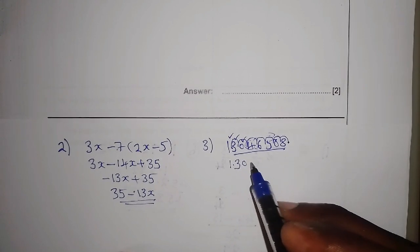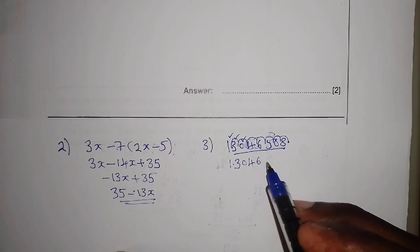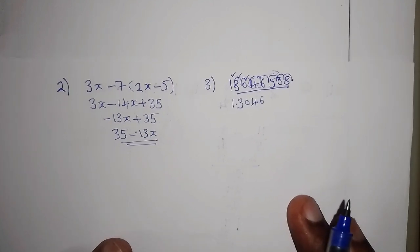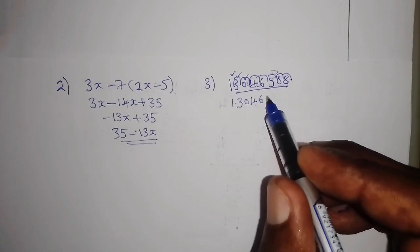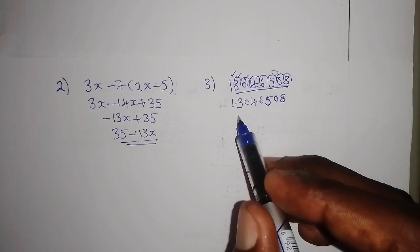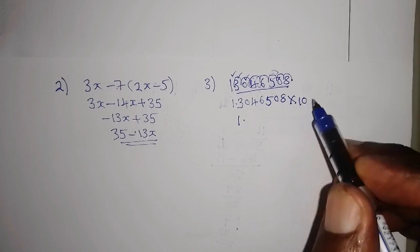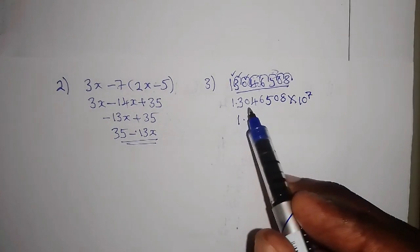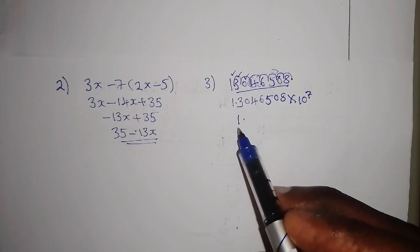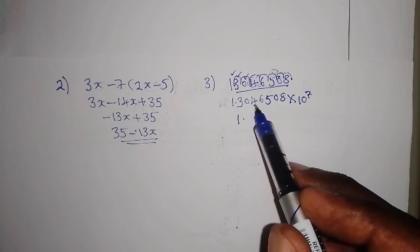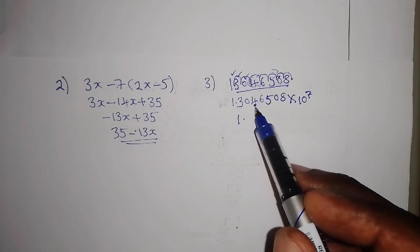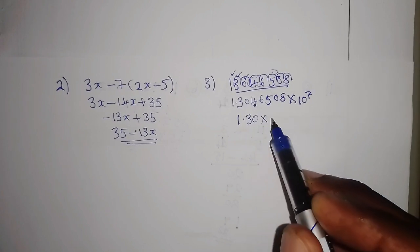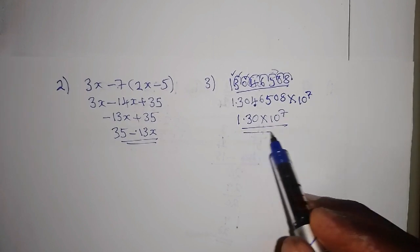So that gives us 1.3046 times ten to the power seven. Now applying three significant figures: we look at the fourth digit — it is four, which is less than five, so we round down and discard it. The rest become zero. Therefore the answer in standard form to three significant figures is 1.30 times ten to the power seven.